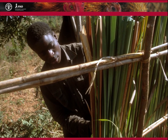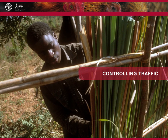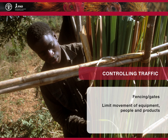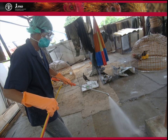The second step is to control the traffic flow in and out of susceptible areas. This simple measure will limit exposure to illness. This can include fencing the perimeter of areas where poultry are kept, adding gates to pens to help keep out unwanted visitors, and limiting the movement of equipment, people and products to and from the farm. Notifying guests to avoid contact with livestock can also help to combat the transmission of disease.